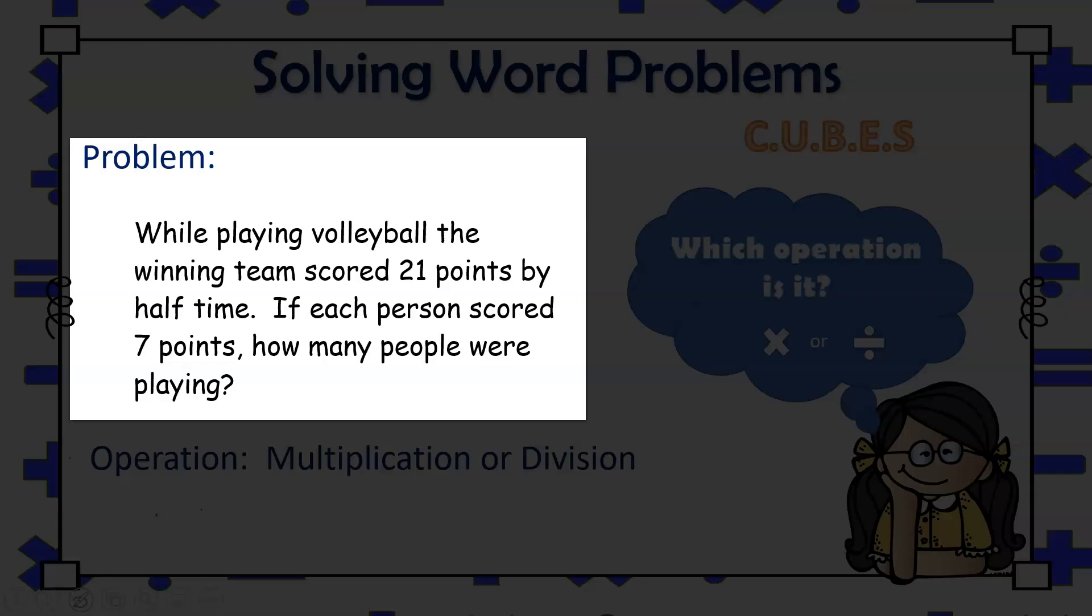while playing volleyball, the winning team scored 21 points by halftime. If each person scored seven points, how many people were playing?